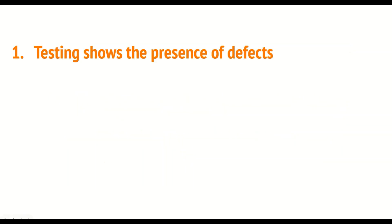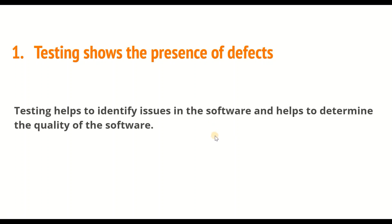The first principle is: testing shows the presence of defects. Testing is a process to identify defects or errors in the software. It helps to identify issues in the software and determine the quality of the software.